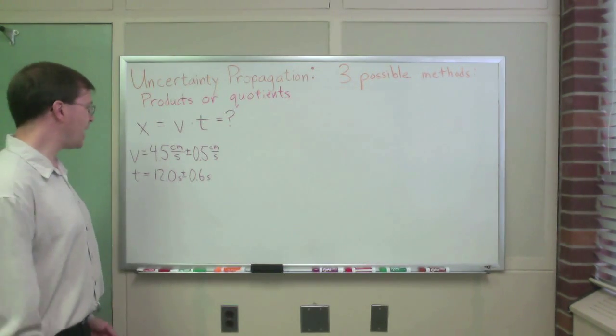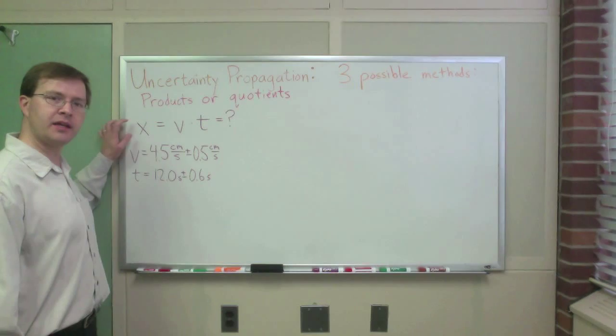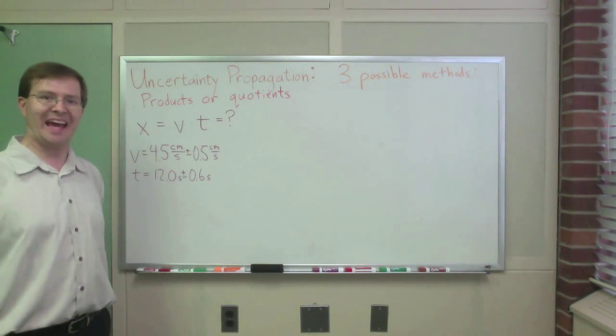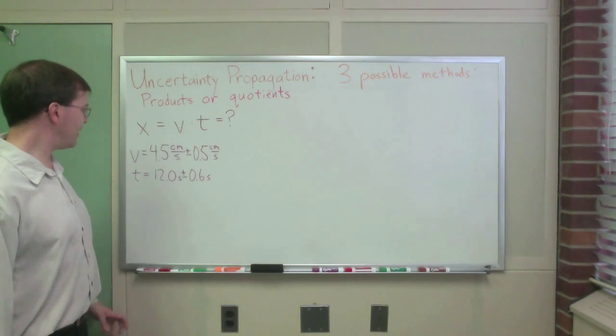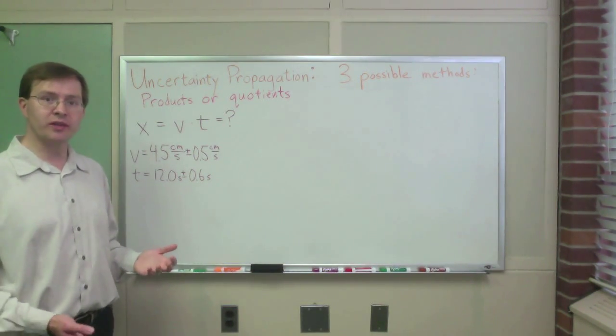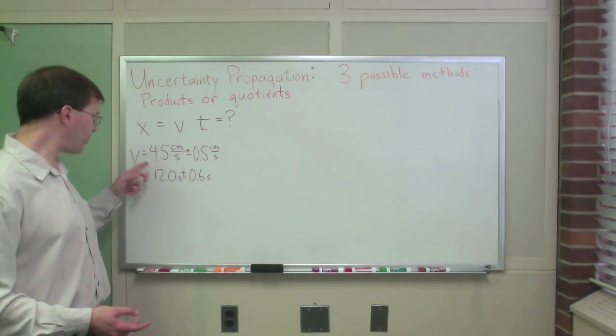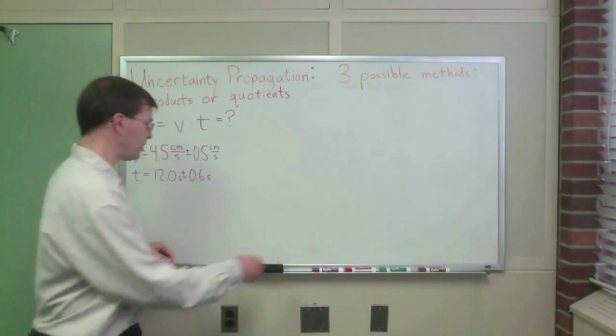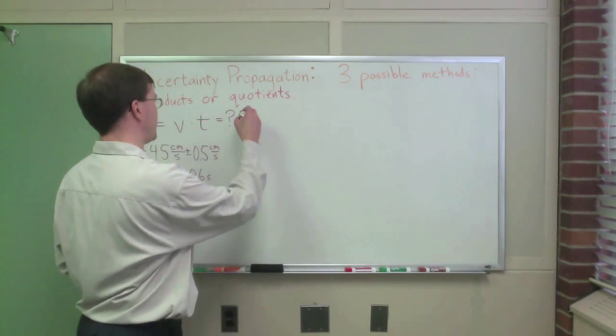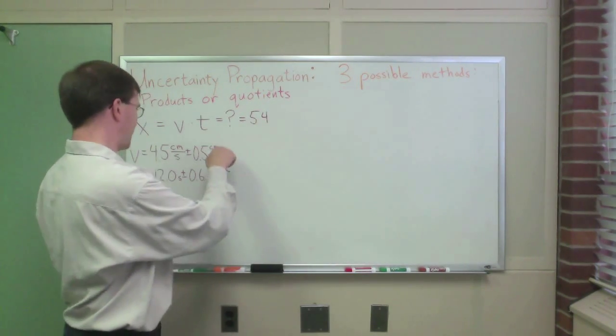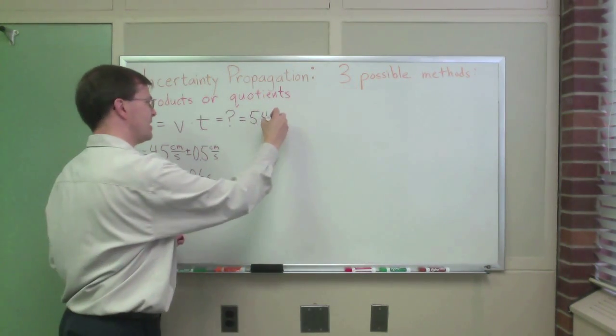I have those measured values, and I want to know what will be the final value and uncertainty for the distance traveled x. Well, for the actual value, the base value, as usual, it's exactly what you'd think it is. 4.5 times 12, if I multiply that, that's 9 times 6, so 54. That means this is going to be 54 centimeters.